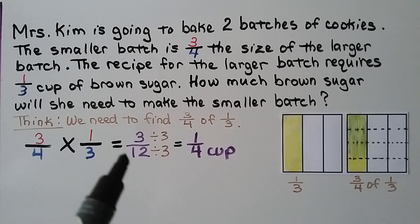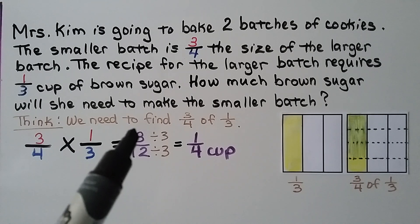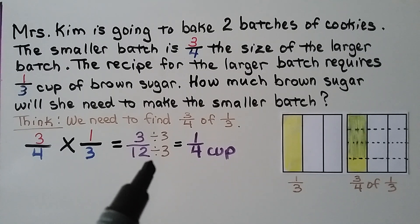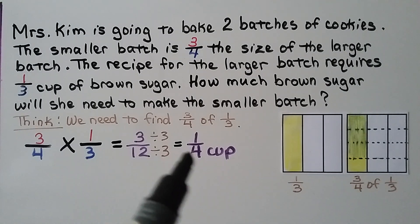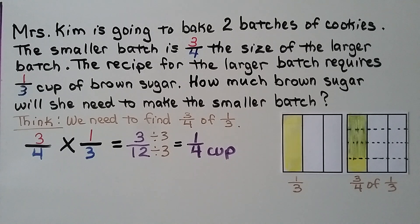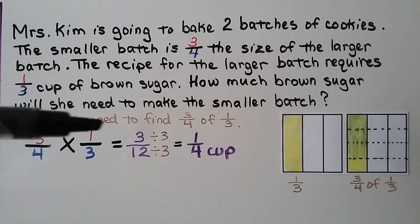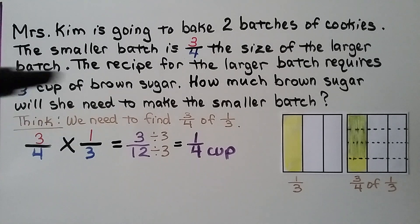We divide both numerator and denominator of three-twelfths by three, since three is the greatest common factor of three and twelve, giving us one-fourth cup. Going across the numerator, three times one is three.